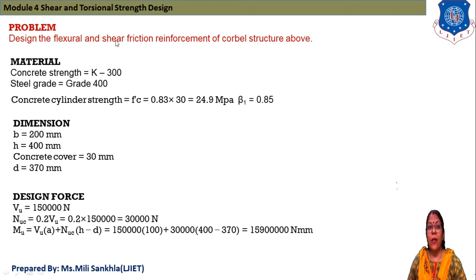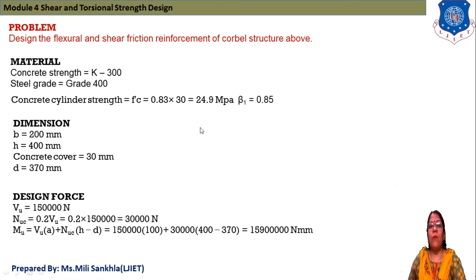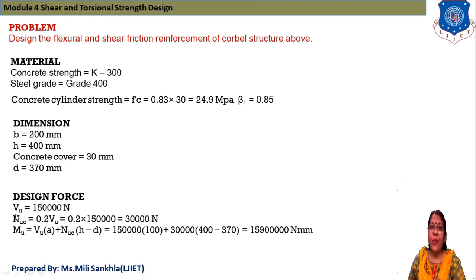Now we solve the example: design flexural and shear friction reinforcement of a corbel structure. Given: concrete strength K300, steel grade Fy = 400 MPa, F'c = 0.83 × 30 = 24.9 MPa, beta1 = 0.85. Dimensions: width B = 200 mm, H = 400 mm, concrete cover = 30 mm, effective depth D = 370 mm. Design force VU = 150,000 N, and NUC = 0.2 × VU = 30,000 N.